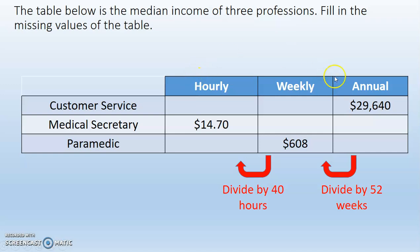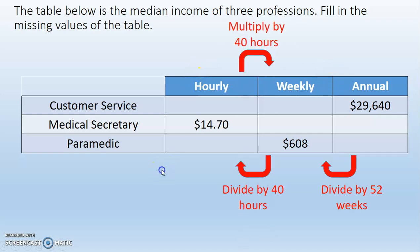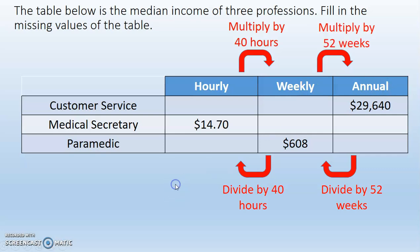Now if we're going the other direction — hourly to weekly — we multiply by 40 hours because we're getting larger. And then going from weekly to the annual salary, we multiply by 52 weeks because typically there are 52 weeks in a year.